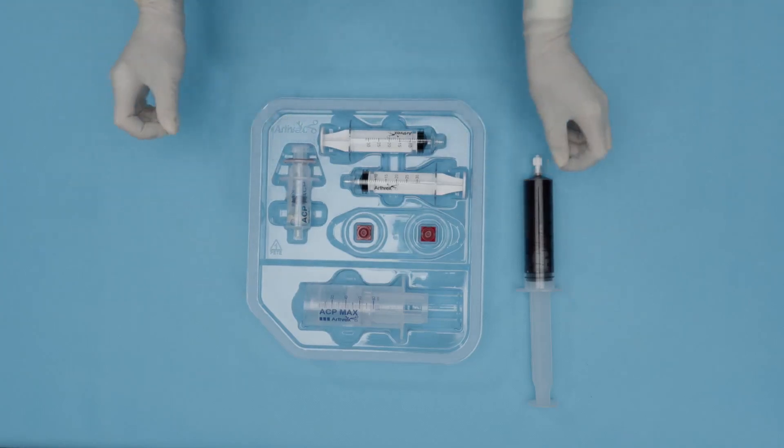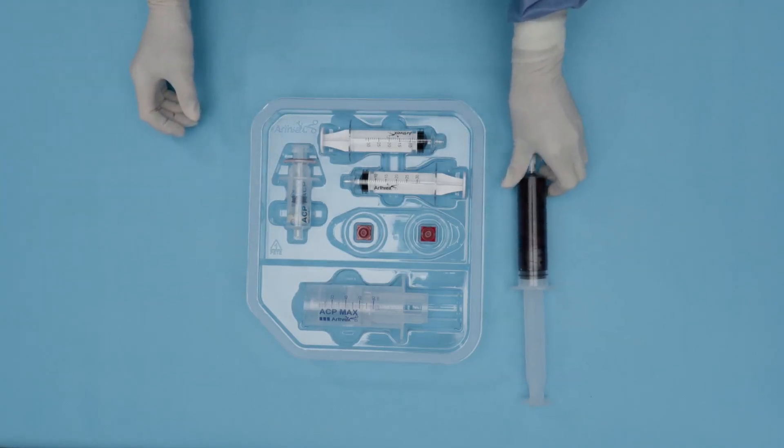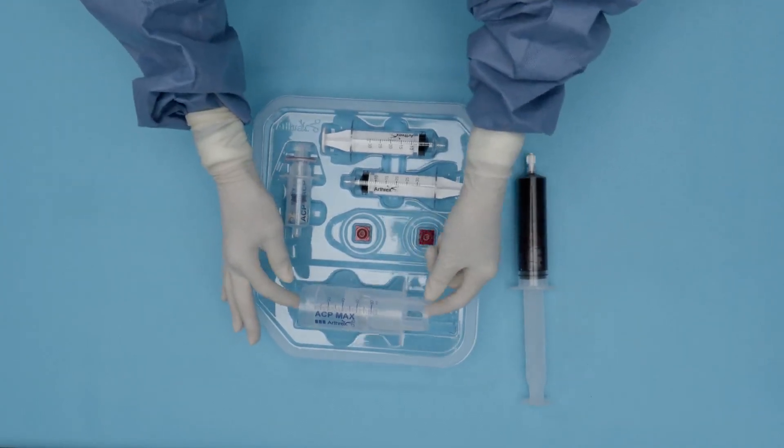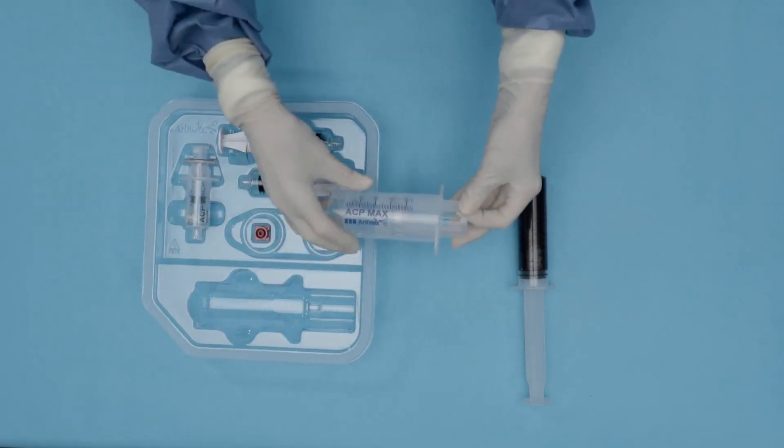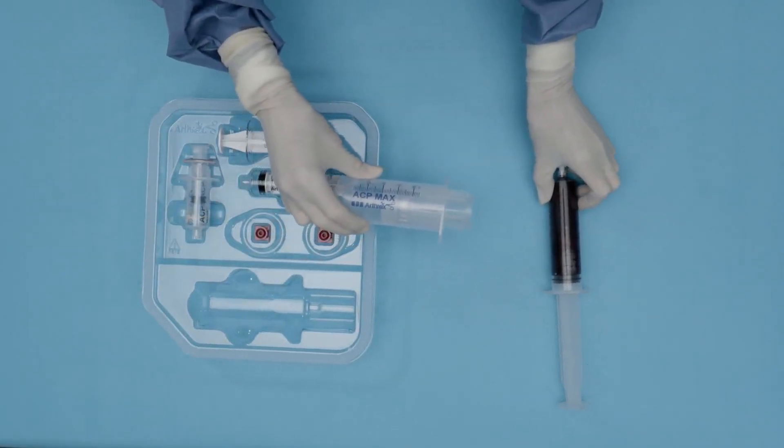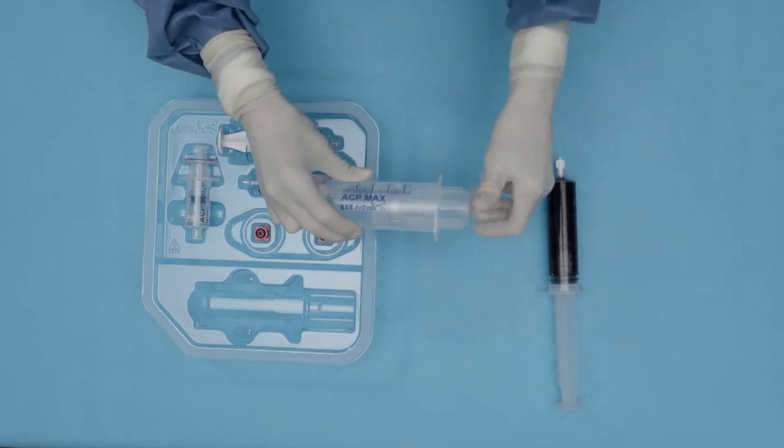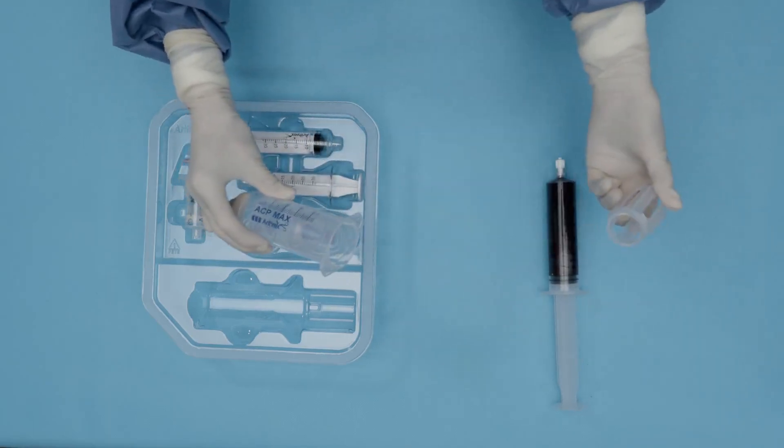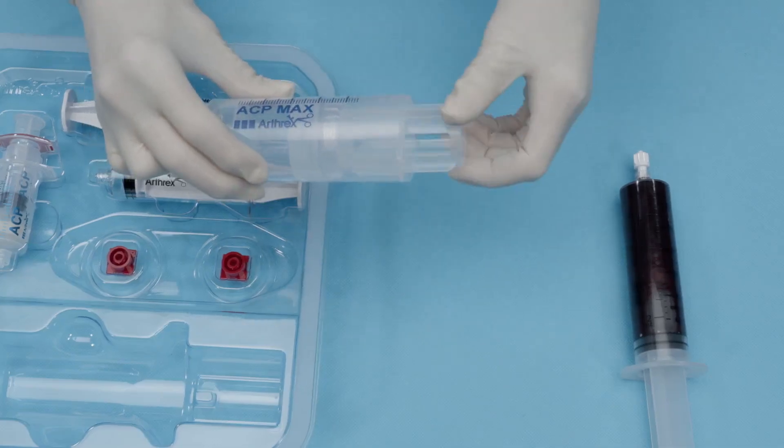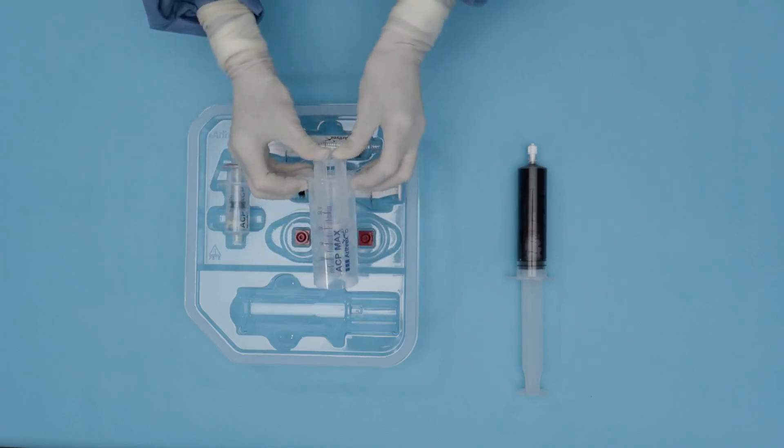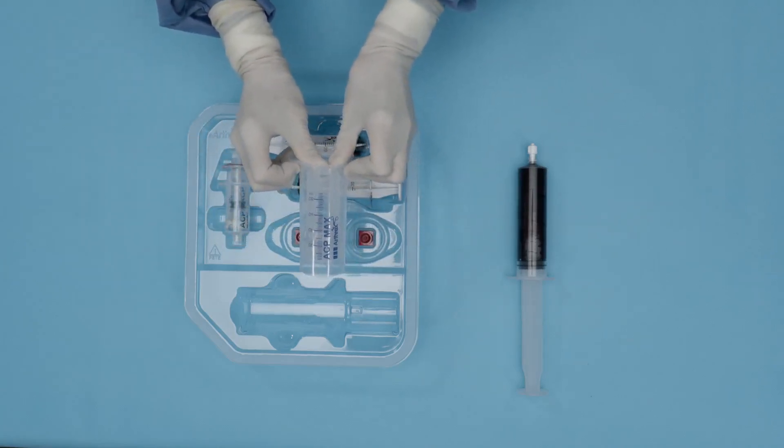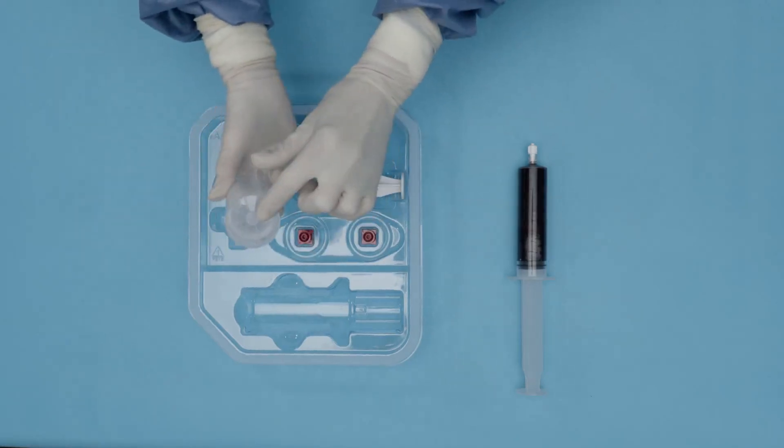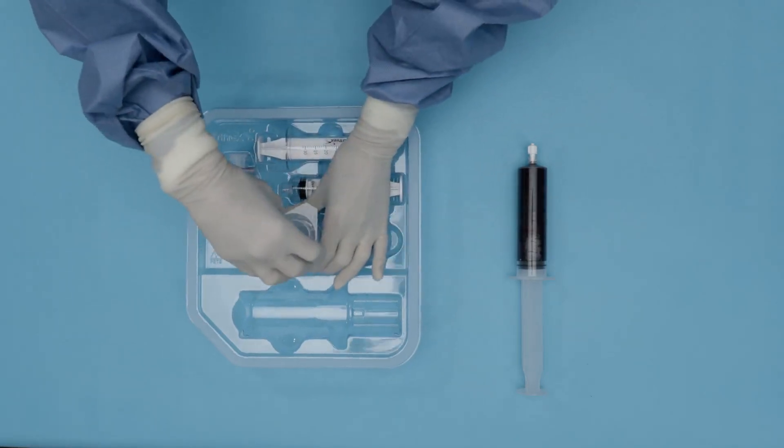When you're ready to process your peripheral blood, you're going to remove your ACP Max device. If you're processing a total of 60 cc's of blood, you don't need the cage guide. It can be removed. If you're processing 30 cc's of peripheral blood, you will use the cage guide. You want to start by removing the air from the ACP Max device. Then you're going to place the lure cap onto the bottom of the ACP Max device.